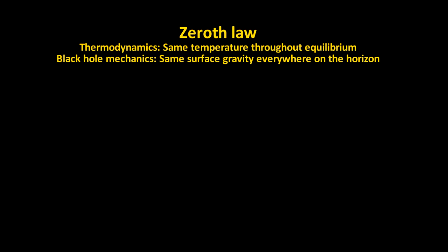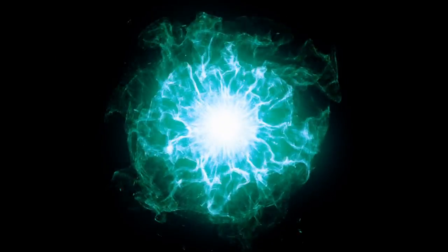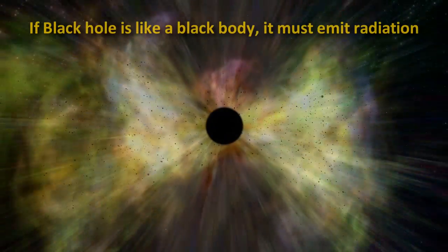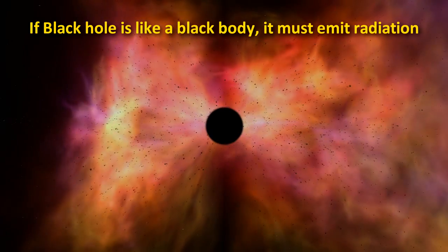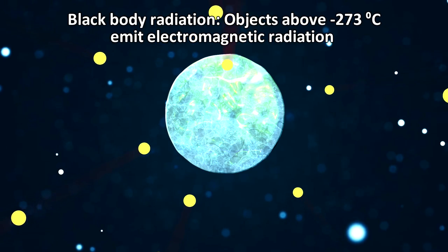And similar to the second law, there are also ways to state the other three laws of thermodynamics in a way that are true for black holes as well. The analogy with the laws of thermodynamics suggests that perhaps black holes are physically a thermal body. In thermodynamics, there is something called a black body. A black body is something that doesn't transmit or reflect any radiation. It only absorbs radiation. So analogously, a black hole is something that also doesn't transmit or reflect any radiation. It only absorbs it.